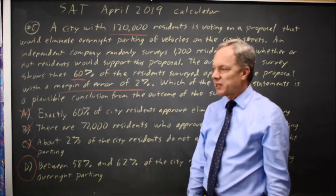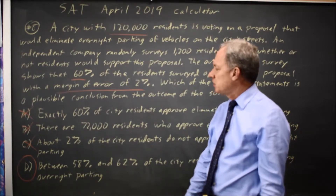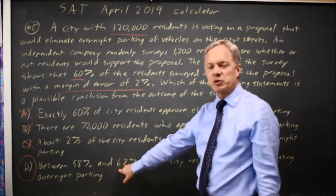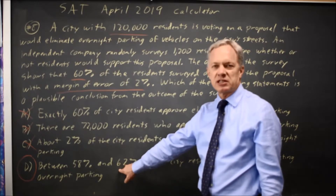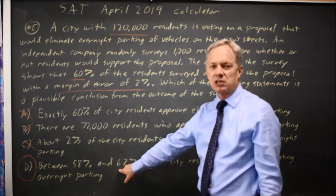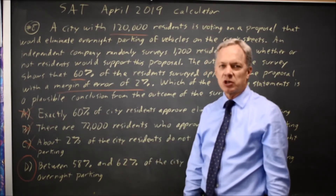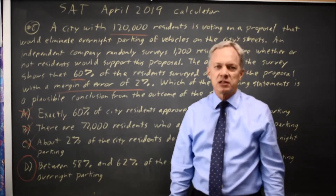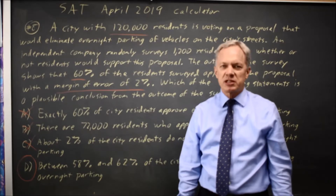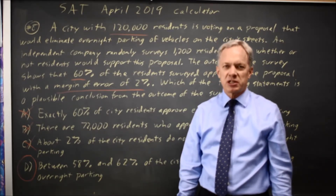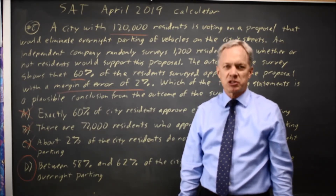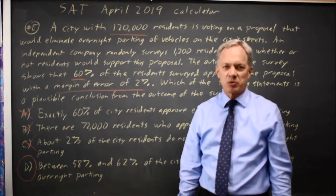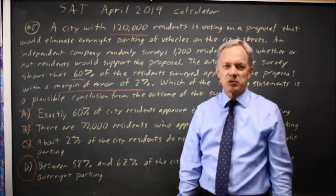It's not exactly the same. You can't conclude with certainty that between 58% and 62% approve of eliminating overnight parking, because about 5% of the time the true proportion will be outside your margin of error from the sample proportion. But it is a plausible conclusion.